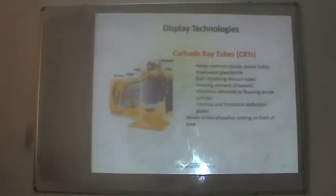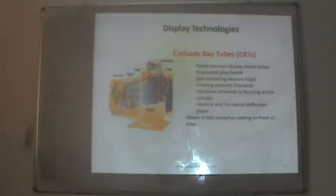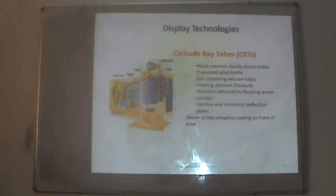Now let us talk about display technologies — how information is displayed on monitors and how the changes have taken place over time. The first device we will examine is the cathode ray tube (CRT), the most important display device available. CRTs have been significantly modified in their design over time.